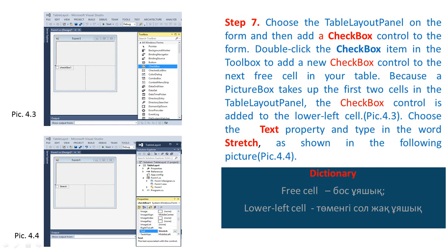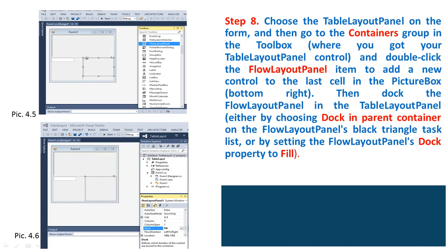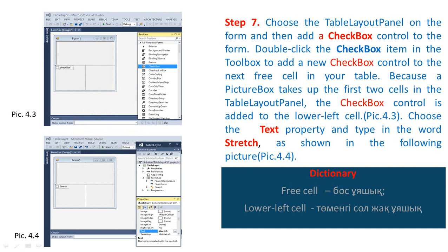Step 7: Choose the table layout panel on the form and then add a checkbox control to the form. Double-click the checkbox item in the toolbox to add a new checkbox control to the next free cell in the table. Because the picture box takes up the first two cells in the table layout panel, the checkbox control is added to the lower left cell. Choose the Text property and type the word Stretch.